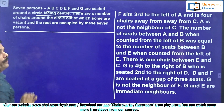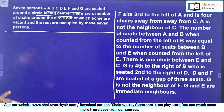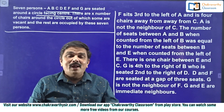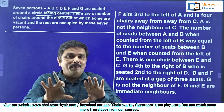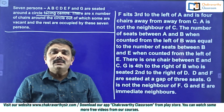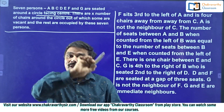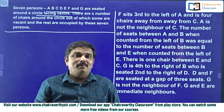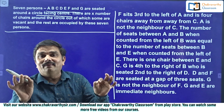There are X number of chairs around the circle, out of which some are vacant and the rest are occupied by these seven persons. Around that circle, not only these seven persons — some other chairs are also there. Seven chairs are occupied by these seven persons according to the conditions; apart from that, there are many other chairs. We need to find out the total number of chairs as well.